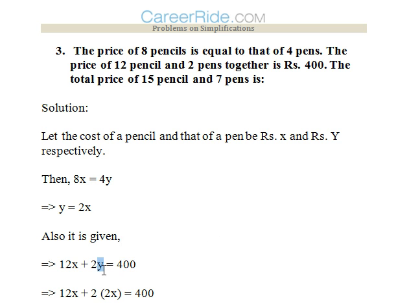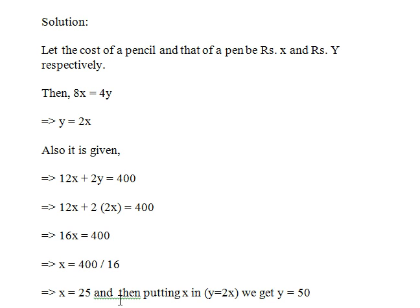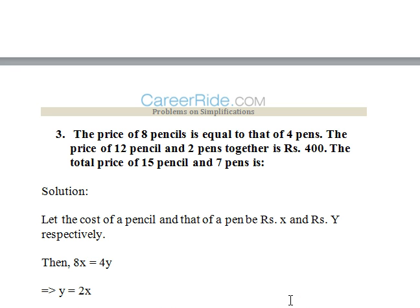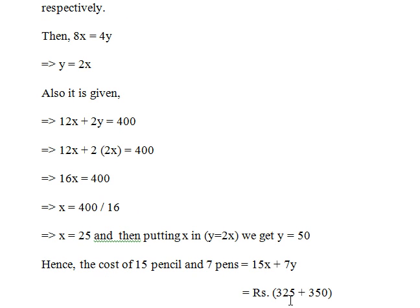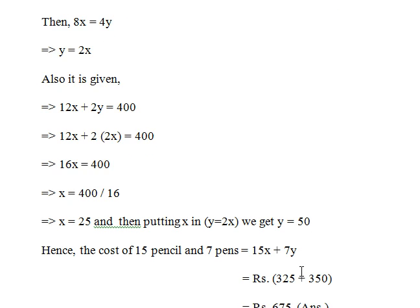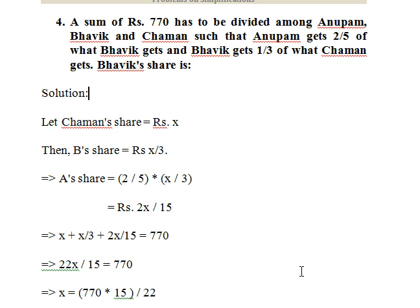From the second condition: 12x + 2y = 400. Substituting y = 2x: 12x + 4x = 400, giving 16x = 400, so x = 25. Therefore y = 2 × 25 = 50. The total price of 15 pencils and 7 pens is 15x + 7y = 15(25) + 7(50) = 375 + 300 = 675.